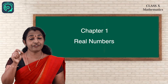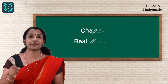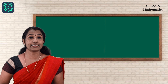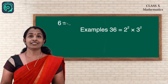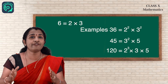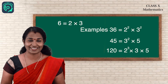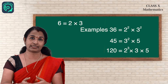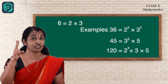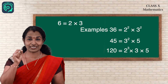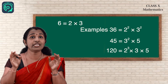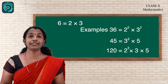Let us take the first part: every composite number can be expressed as the product of primes. Let us take an example — 6 is equal to 2 into 3. This is the only way to express the number 6 in terms of its prime factors. That is why it is known as unique — that is Part 2: it is unique.